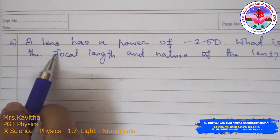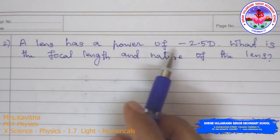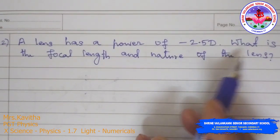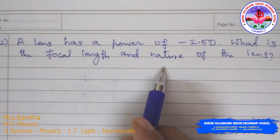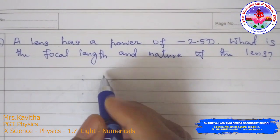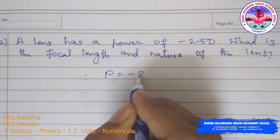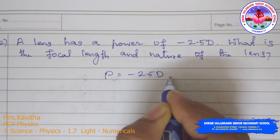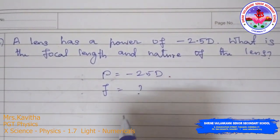Next: a lens has a power of −2.5 D. What is the focal length and the nature of the lens? This is a very easy numerical. P = −2.5 D is given; we need to find F.